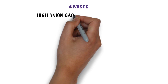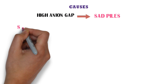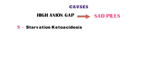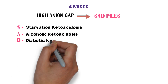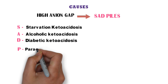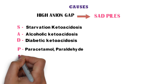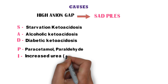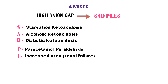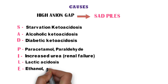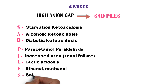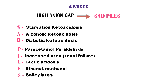Remember causes of high anion gap by the mnemonic SAD PILES: S for starvation ketoacidosis, A for alcoholic ketoacidosis, D for diabetic ketoacidosis, P for paracetamol and paraldehyde, I for increased urea — i.e., uremia which occurs in renal failure, L for lactic acidosis, E for ethanol and methanol, and S for salicylates.